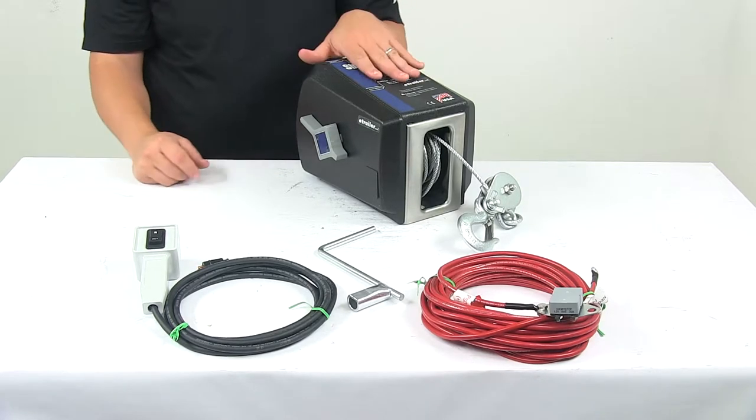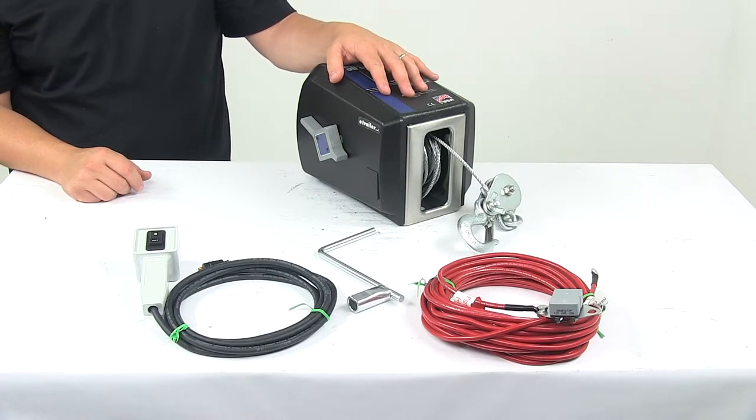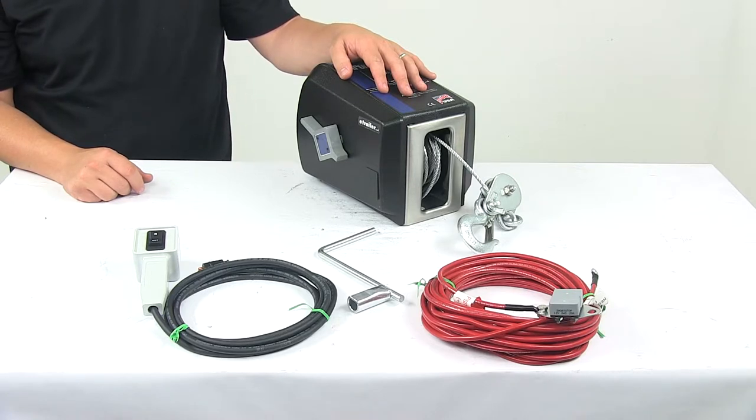The current draw, 70 amps at 12 volts. Electric winches should be used intermittently, so the maximum continuous run time is 4 minutes for this unit.